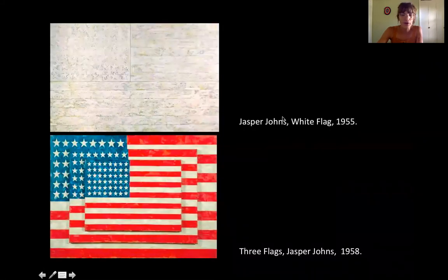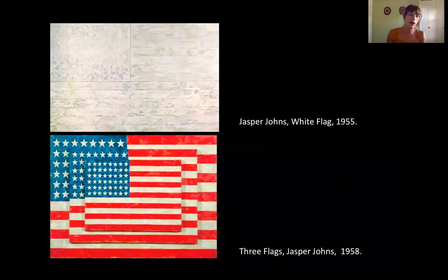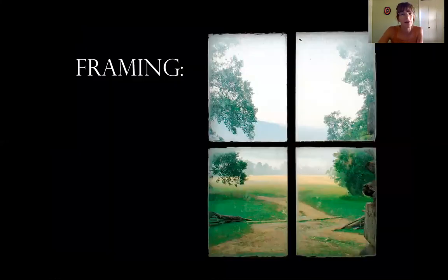Johns worked with the flag image many times — here he has three flags stacked, and here a white flag. We'll look at another one of his flags later when we discuss colors and complementary colors.